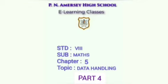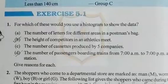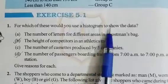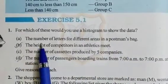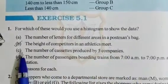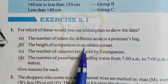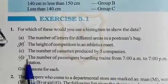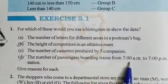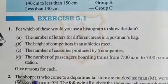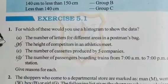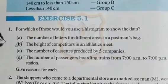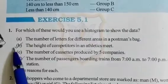Hello students, let's continue Chapter 5, that is Data Handling. Today we will start Exercise 5.1. For which of these would you use a histogram to show the data? First: the number of letters for different areas in a postman's bag. Second: the height of competitors in an athletics meet. Third: the number of cassettes produced by 5 companies. Fourth: the number of passengers boarding trains from 7 a.m. to 7 p.m. at a station. We represent data by histogram which can be grouped into class intervals, so you have to take option B and option D.